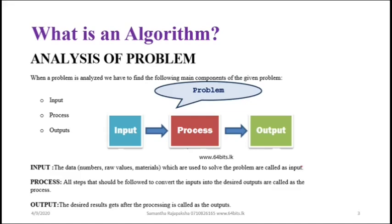Initially we want to know what is an algorithm. As you know, algorithms are developed when you are building systems. As a software engineer or programmer when you are going to develop systems, we need to develop algorithms. A system is a collection of subsystems with components working together to perform specific tasks. In systems there are mainly three components: input, process, and output.